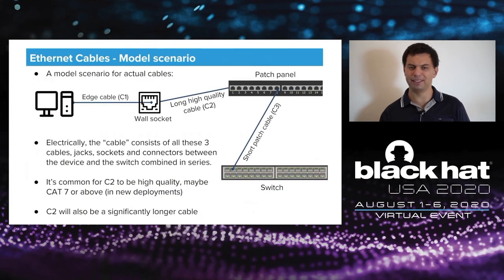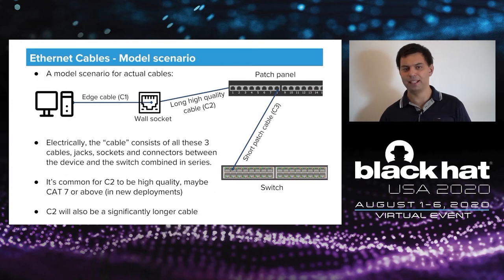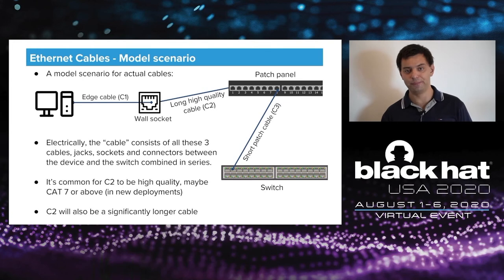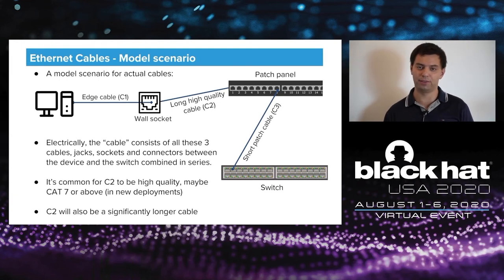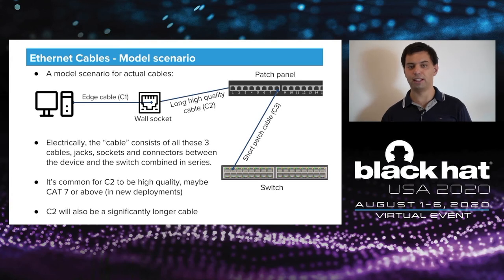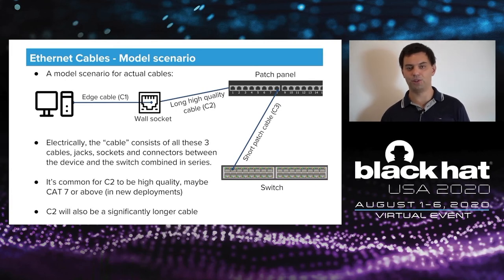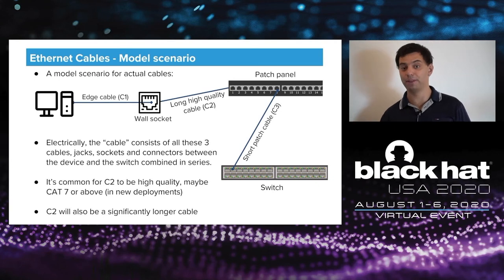Connecting cables in series is actually the common scenario: a device is rarely connected by one cable directly to a switch, but rather via multiple cable segments — C1 through C3 — that electrically constitute one cable. Bit flips require a combination of factors: high signal attenuation caused by long cables, a fault somewhere in the chain allowing interference through, and a source of electromagnetic interference affecting the faulty region. These naturally occur from nearby equipment or cabling. C2 can be long and C1 can be faulty, so together the combined cable is effectively a long faulty cable.